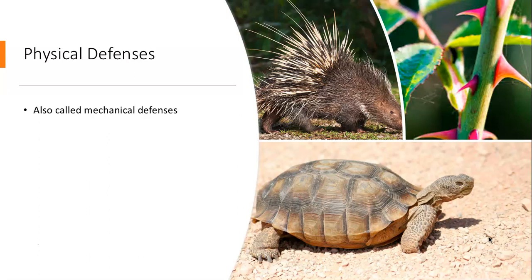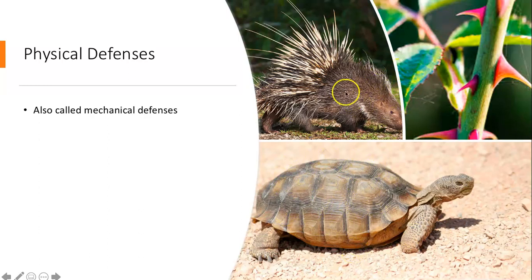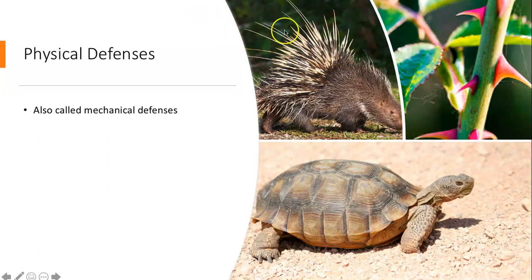First, I want to talk about physical defenses. If you've ever seen my tortoise Sheldon, you know he's got a really tough shell and some spurs on his thighs — that's why they're called African spur-thigh tortoises, or sulcata tortoises. They can pull themselves into that shell, and it would be pretty tough for a predator to break open. A porcupine has really sharp spines that you would not want to get stuck with — they hurt really, really bad.